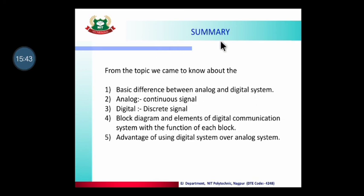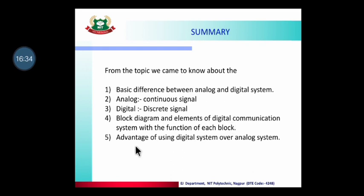To summarize this topic: we have seen the basic difference between analog and digital — in analog, information is a sine wave; in digital, information is discrete ones and zeros. We have seen the block diagram of digital communication: source encoder, channel encoder, modulator, antenna, channel, demodulator, channel decoder, source decoder, and destination, with the function of all blocks. Lastly, the advantages of digital systems over analog: digital systems are more immune to noise, noise effect is less, and repeaters can be used for long distance travel.